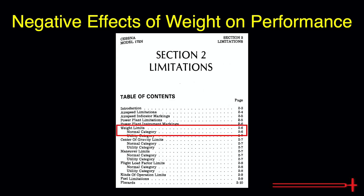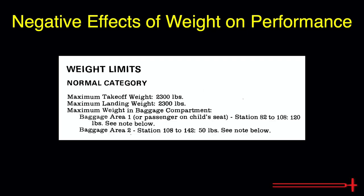Look in the table of contents for the maximum weight page or chart. Here, we see that a 1978 Cessna 172 November model in the normal category has a maximum allowable weight of 2,300 pounds for both takeoff and landing. We don't focus much on the utility category — that typically only applies to aircraft performing very abrupt maneuvers, for example, spins.